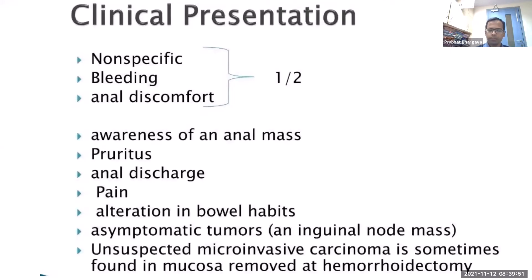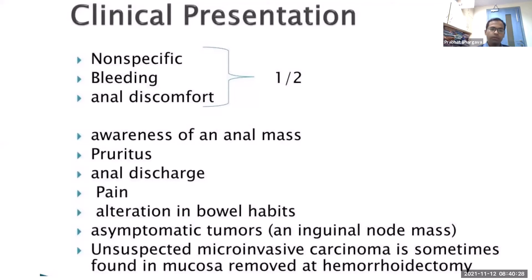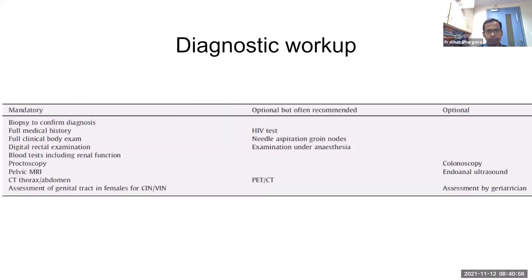Because bleeding from the anal region and anal discomfort are common presentations, patients often ignore symptoms or are initially misdiagnosed with hemorrhoids. In multiple retrospective series, time from onset of symptoms to presentation was around 3.5 months, and time to diagnosis was around seven months. One series showed time to diagnosis of two years. Other symptoms include awareness of an anal mass, pruritus, anal discharge, pain, alteration in bowel habits, and unsuspected microinvasive carcinoma found during hemorrhoidectomy.